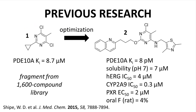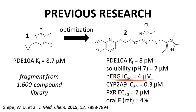Merck has been actively researching PDE-10A inhibitors for some time. Compound 1 was discovered as a hit from screening a fragment library. For such a small compound, it has very promising potency with a Ki of less than 10 micromolar. Compound 1 went through extensive optimization to give compound 2, which has exquisite potency at 8 picomolar. Unfortunately, compound 2's other properties are not as favorable: moderate inhibition of the hERG ion channel, multiple indications of possible drug-drug interactions through cytochrome P450 inhibition and PXR agonism, and low bioavailability in the rat.